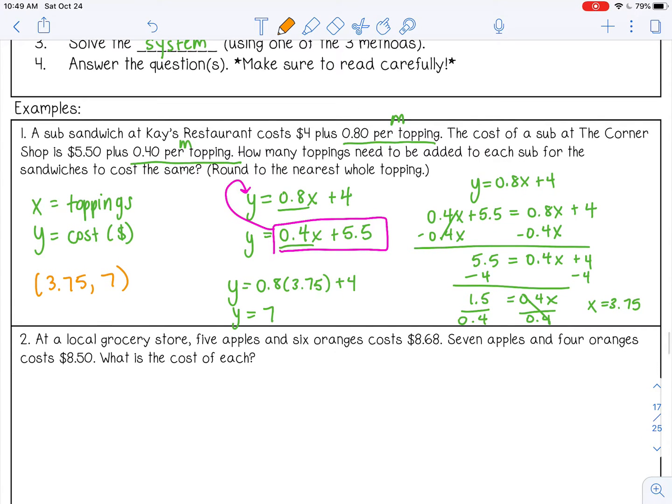So the solution to this is 3.75, 7. Now, we need to go back and read the question because we may not have answered the question yet. So the question says, how many toppings need to be added to each sub for the sandwiches to cost the same? So this is my x, my toppings, and this is my y. So 3.75 toppings. Well, you can't have 0.75 of a topping, so you can round up to about four toppings. Or you can say at most three toppings. I'm going to say about four toppings. And when you have about four toppings, the subs will cost $7 each. They'll be the same.